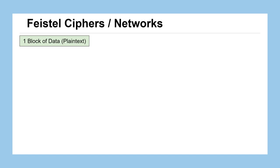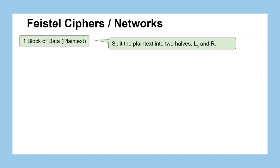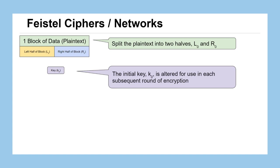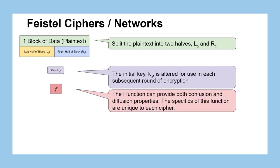Let's take a look at how the Feistel cipher works. Take one block of data — call that our plaintext — and split it into two halves, L sub 0 and R sub 0. We have a key, which could be text or a binary stream, any piece of information that can be represented numerically. We'll use this as an initial key, but it gets altered for each subsequent round, adding a layer of complexity. We have some function called F, and the F function is what actually provides the confusion and diffusion properties through a series of operations.